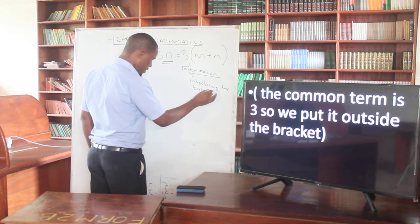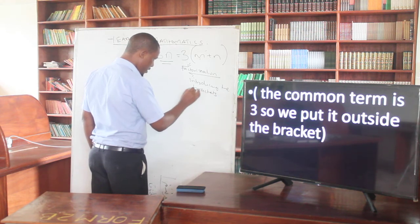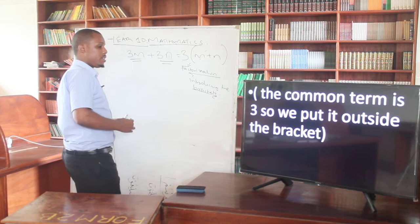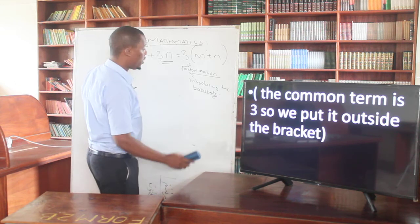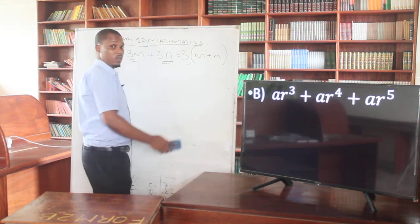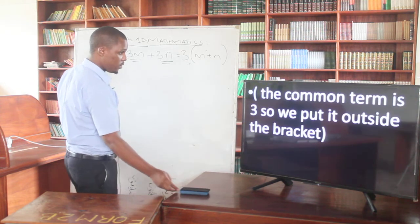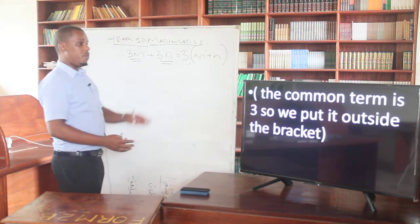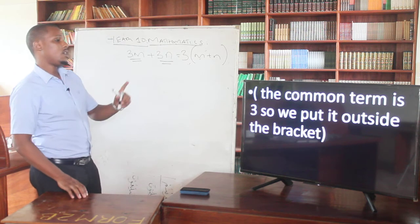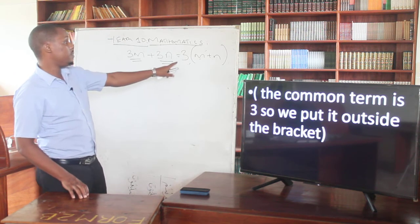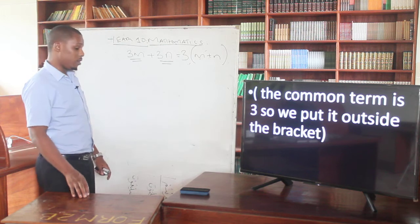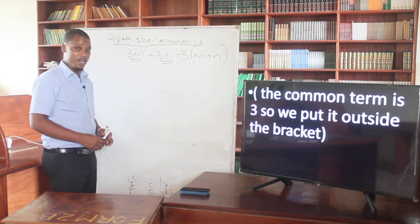The introduction of brackets is what we call factorization, while removing them is what we call expansion. The common term is 3, so we put 3 outside and the remaining terms in the bracket. That's what we are calling factorization. Let's see the next example.